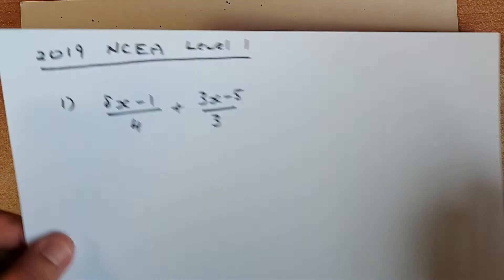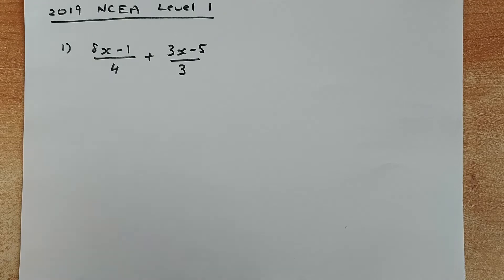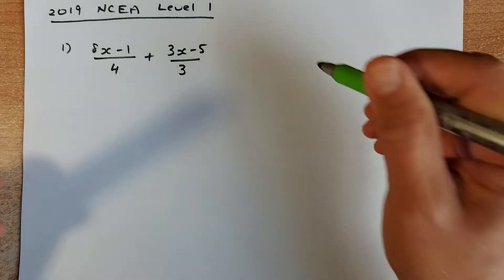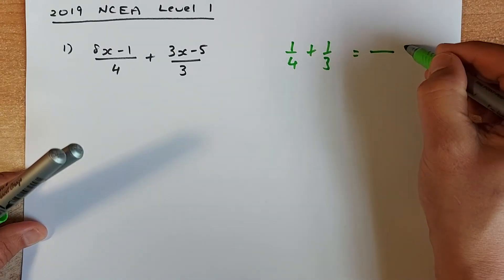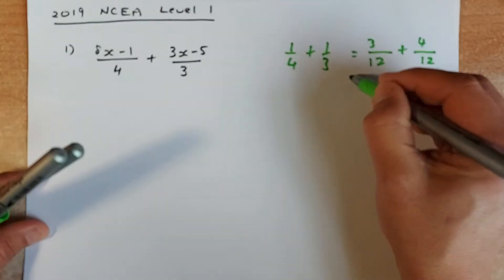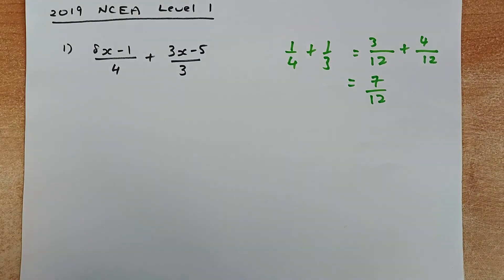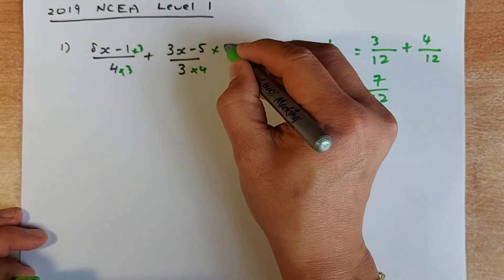Now we are going to do some NCEA papers. The first one is from the 2019 NCEA — we are going to simplify an addition of two fractions. Just like 1 quarter plus 1 third, where you make the same denominator of 12, multiply by 3 and by 4 to get 7 over 12, the same principle applies here. So you are going to multiply by 3 for the first fraction and by 4 for the second.